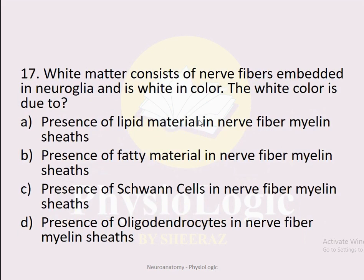MCQ number seventeen: White matter consists of nerve fibers embedded in neuroglia and is white in color. The white color is due to — Option A: presence of lipid material in nerve fibers, myelin sheaths. Option B: presence of Schwann cells. Option C: presence of oligodendrocytes. The correct option is A: presence of lipid material in nerve fibers, myelin sheaths.